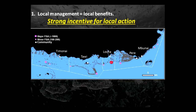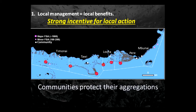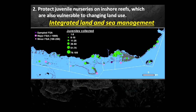The aggregation where we worked was under protection by that community, but the others really weren't. Our message was: local management, local benefits — you guys should all be doing something. And this is what they did: they started protecting their aggregations right away, by limiting fishing and limiting spearfishing at night, which is the major way these fish are vulnerable to the fishery. They also protected juvenile nursery areas on inshore reefs, which are vulnerable to changing land use.